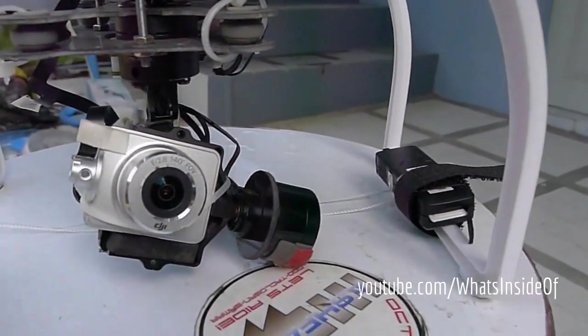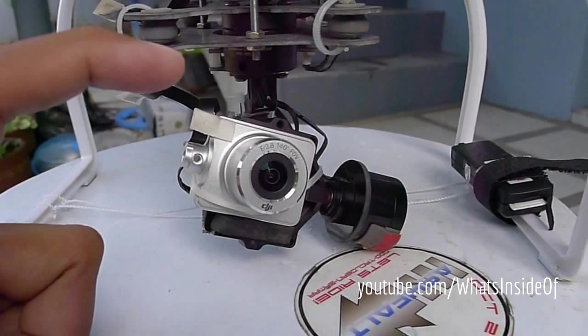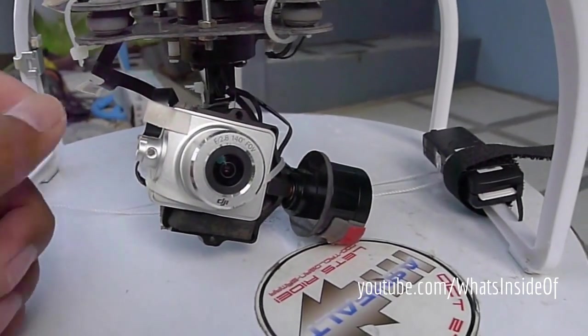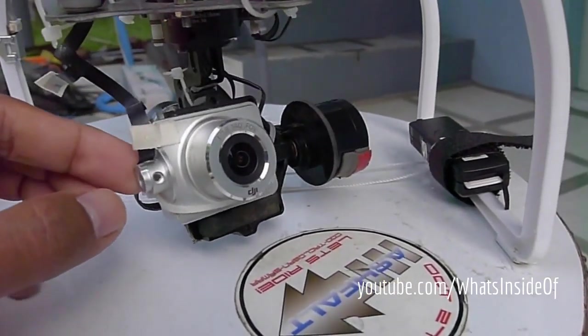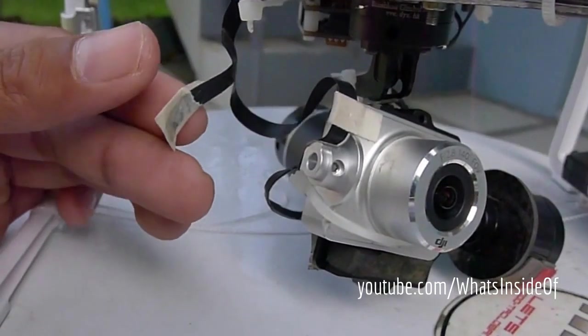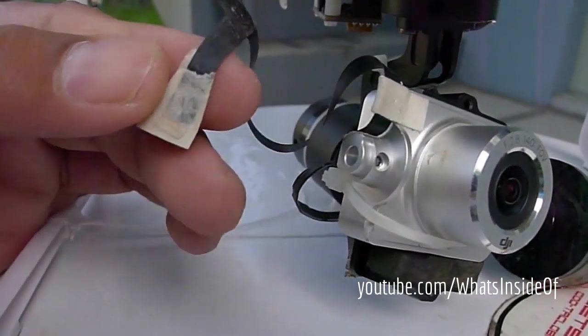of the Vision Plus. All you need is a small screwdriver to remove all the screws that you can find there, and then from there you need to remove the flat ribbon cable from the gimbal motor.